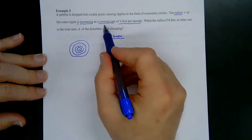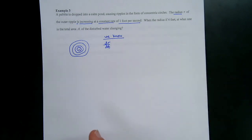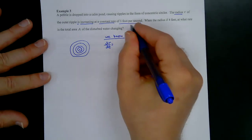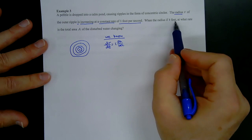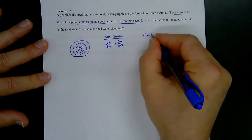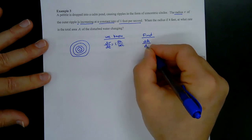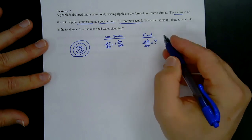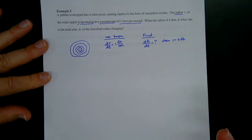From the problem, dr/dt is the rate at which the radius is changing. Since it's increasing, it's positive: dr/dt equals one foot per second. When the radius is four feet, we want to find the rate at which the total area of the disturbed water is changing — that is, we need to find dA/dt when r equals four feet.